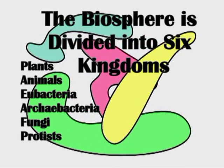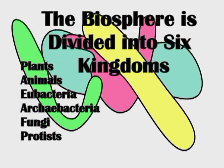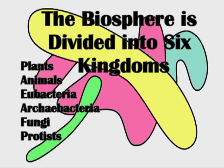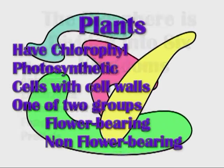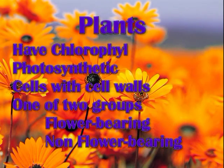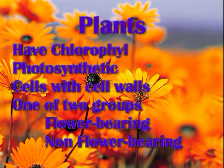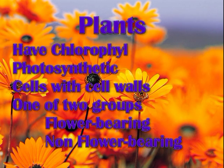Distinguishing factors of plants are that they contain chlorophyll, they're photosynthetic, they have cells with cell walls, and they are split into two groups: flower-bearing and non-flower-bearing.